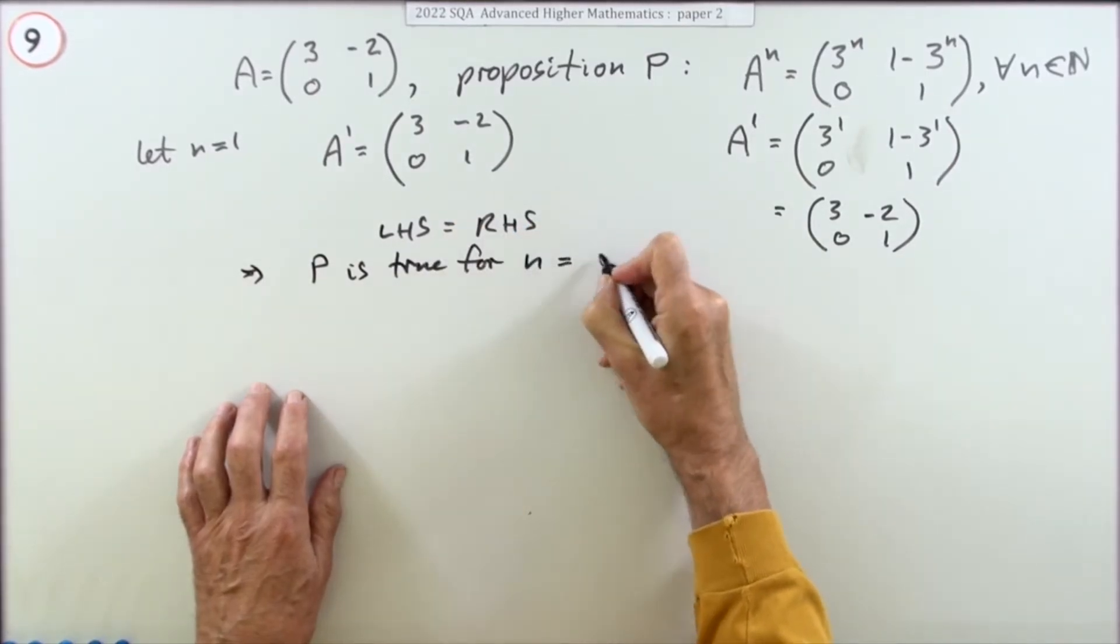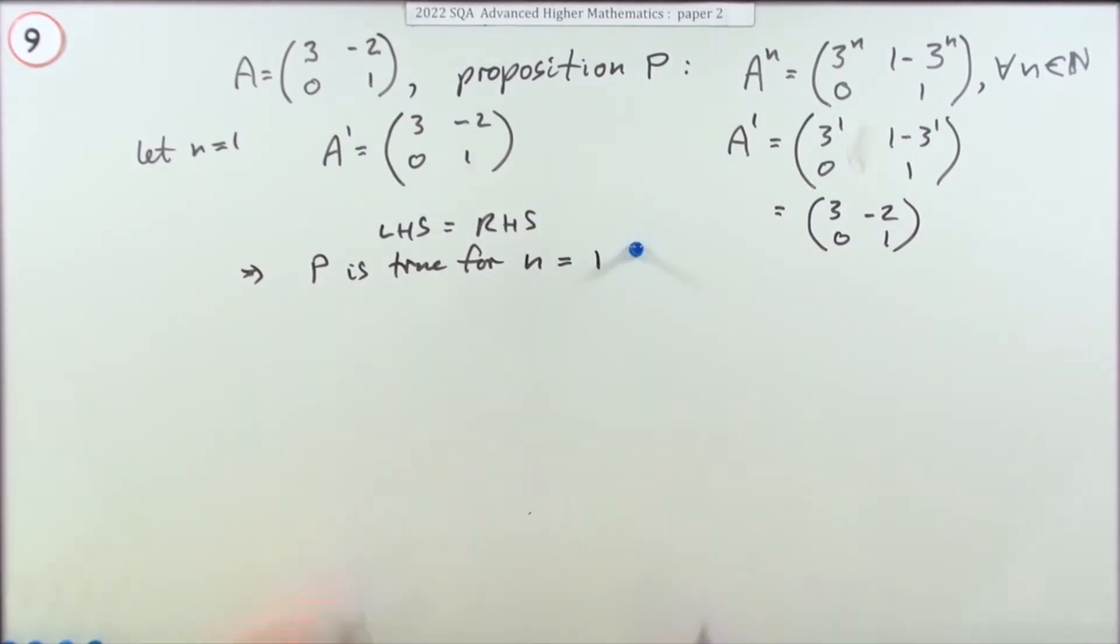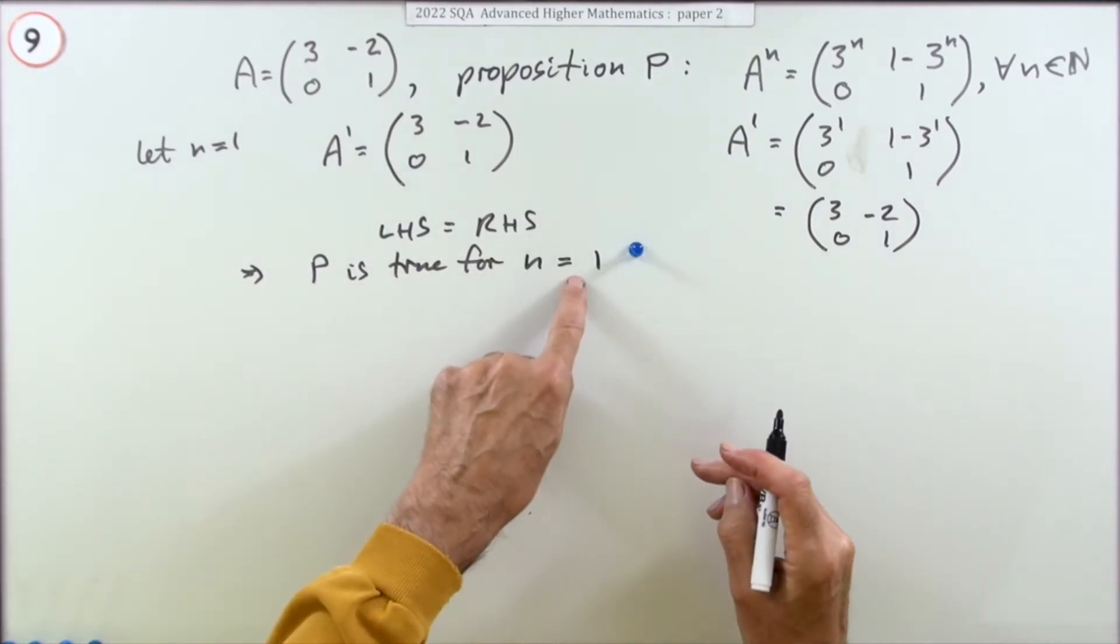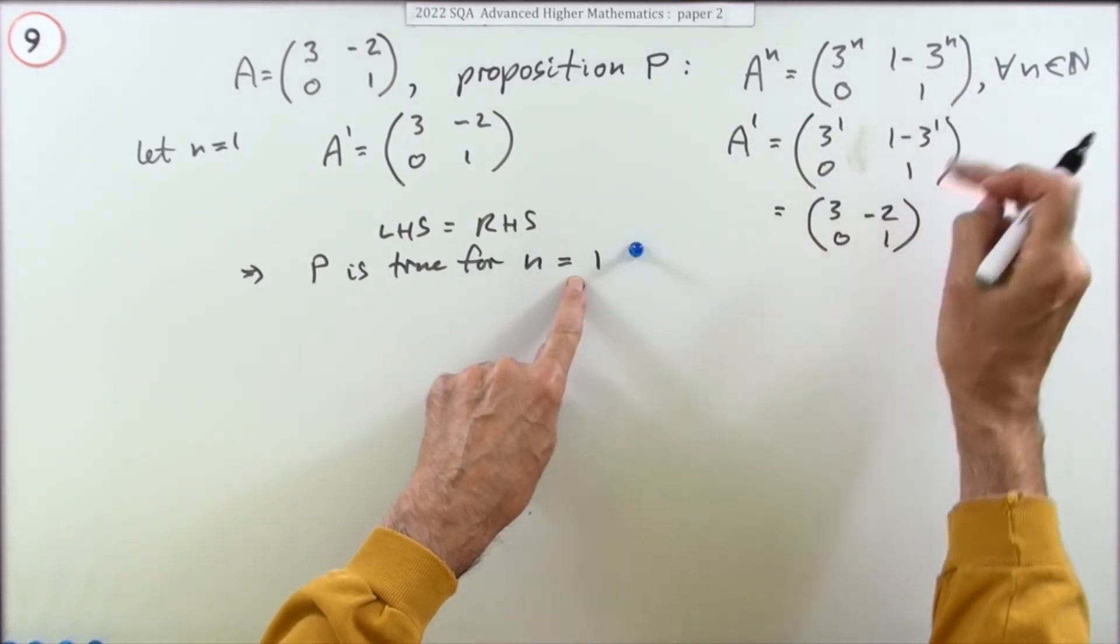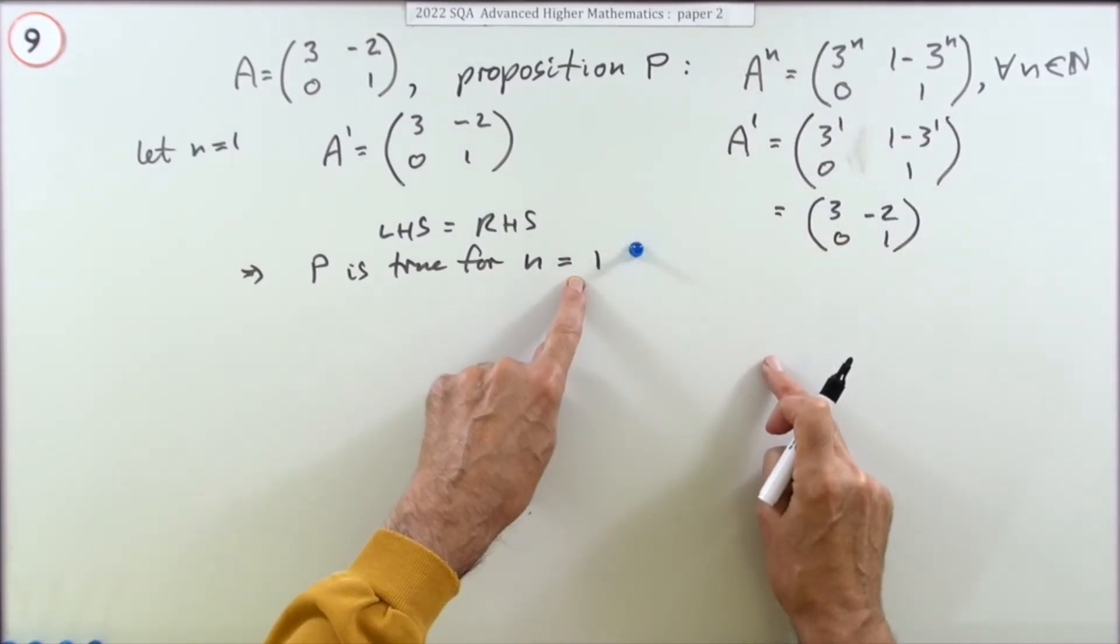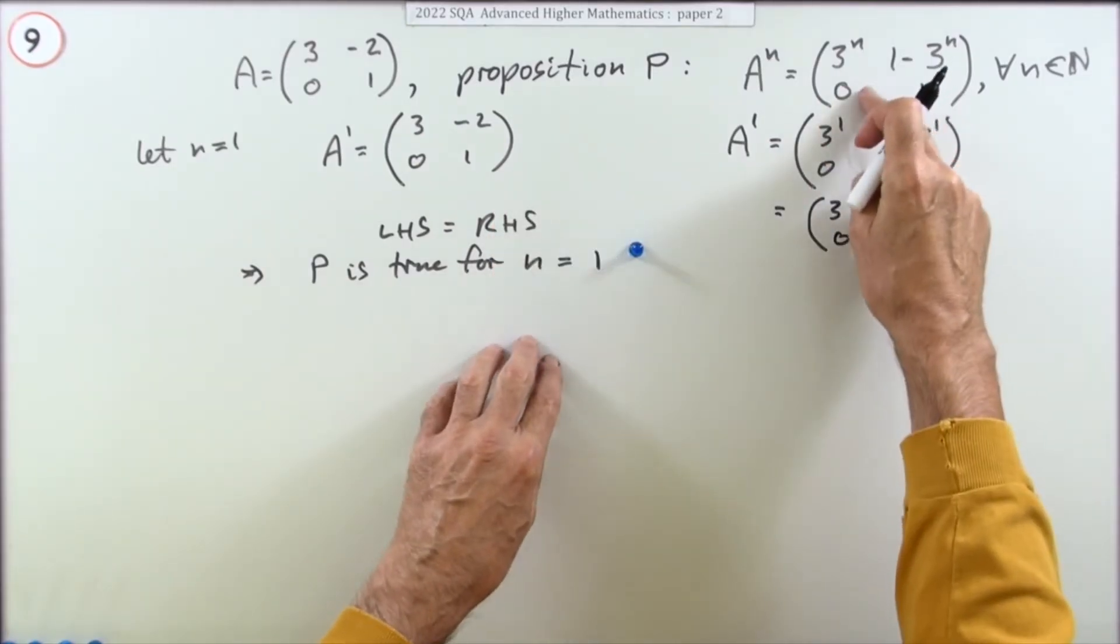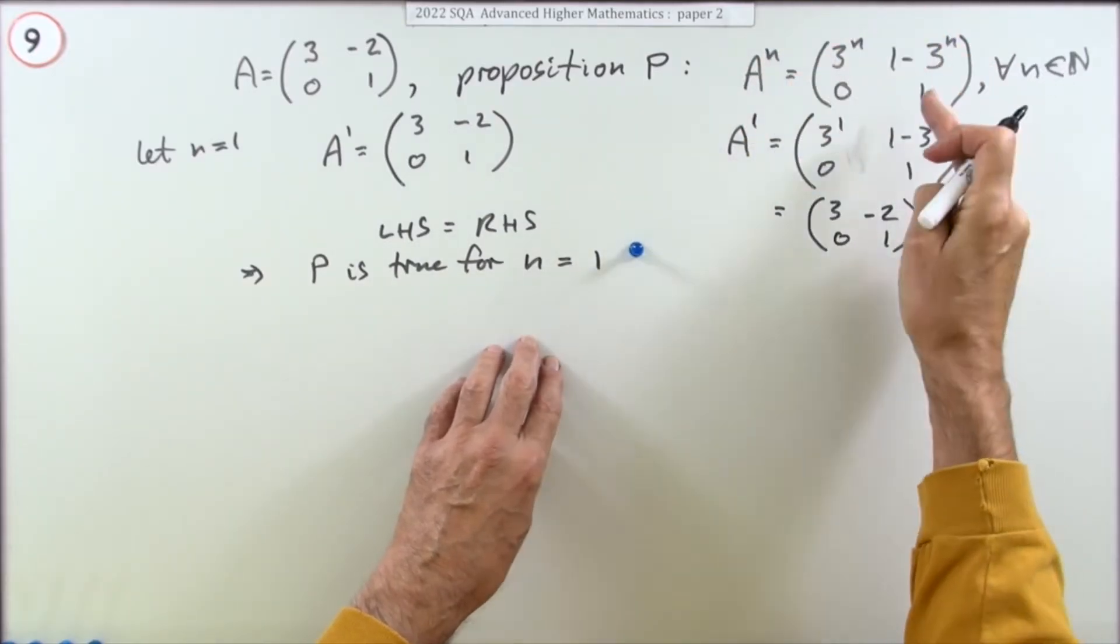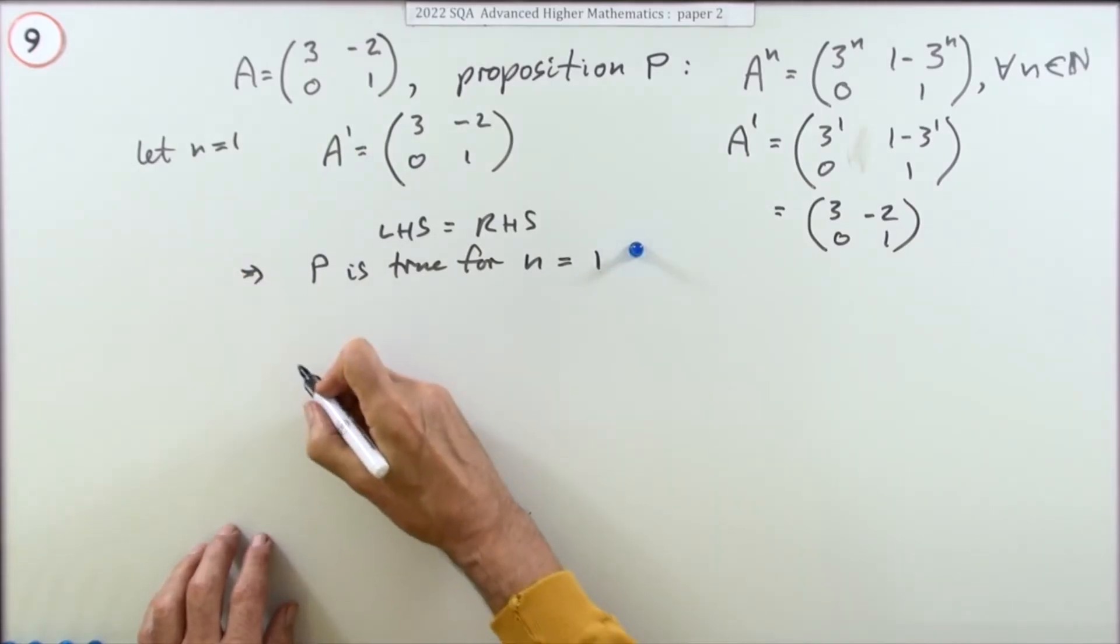Now we make the inductive hypothesis. This is saying, okay it was true to start with, let's just assume it's true for any particular value further on, just a general case. Instead of n you could use k. This is just an if: if it's true somewhere further on, does it follow logically that the next step is also true?